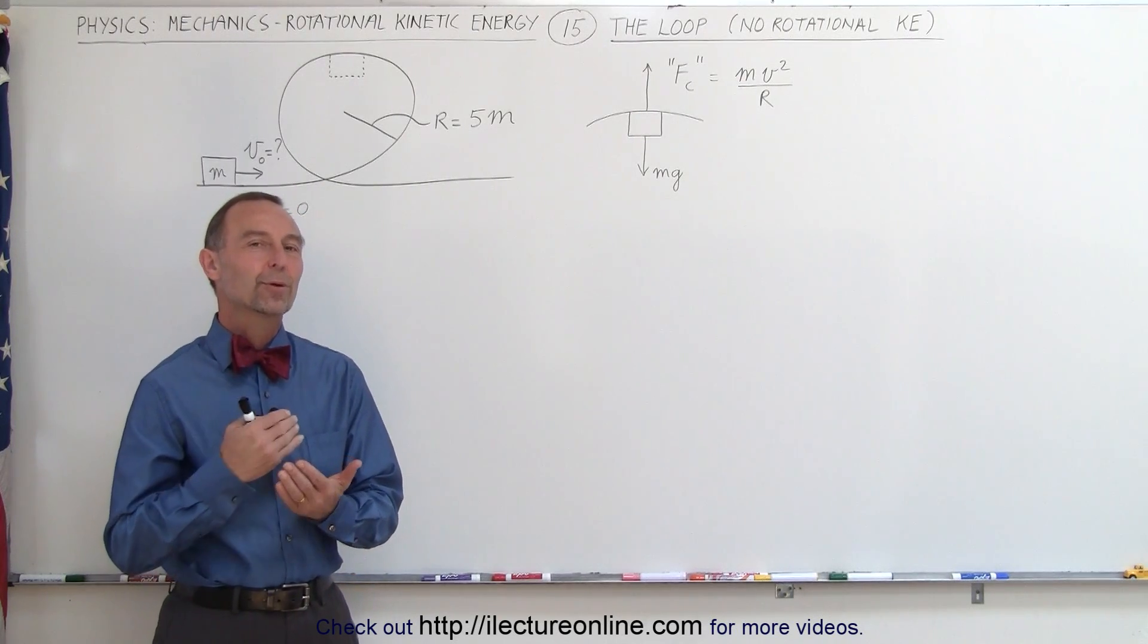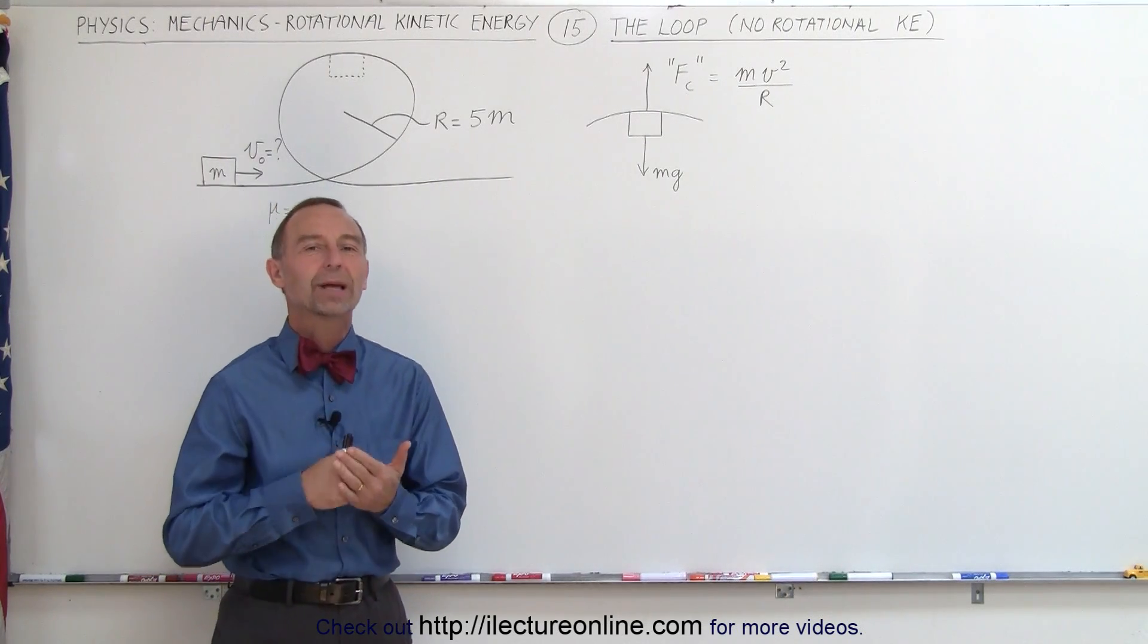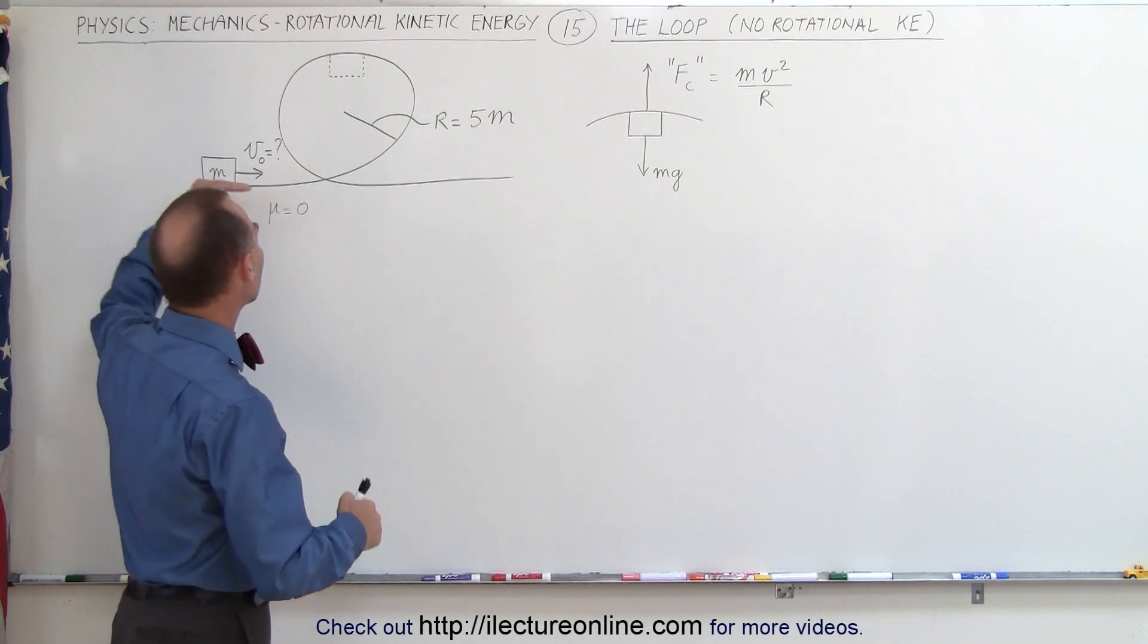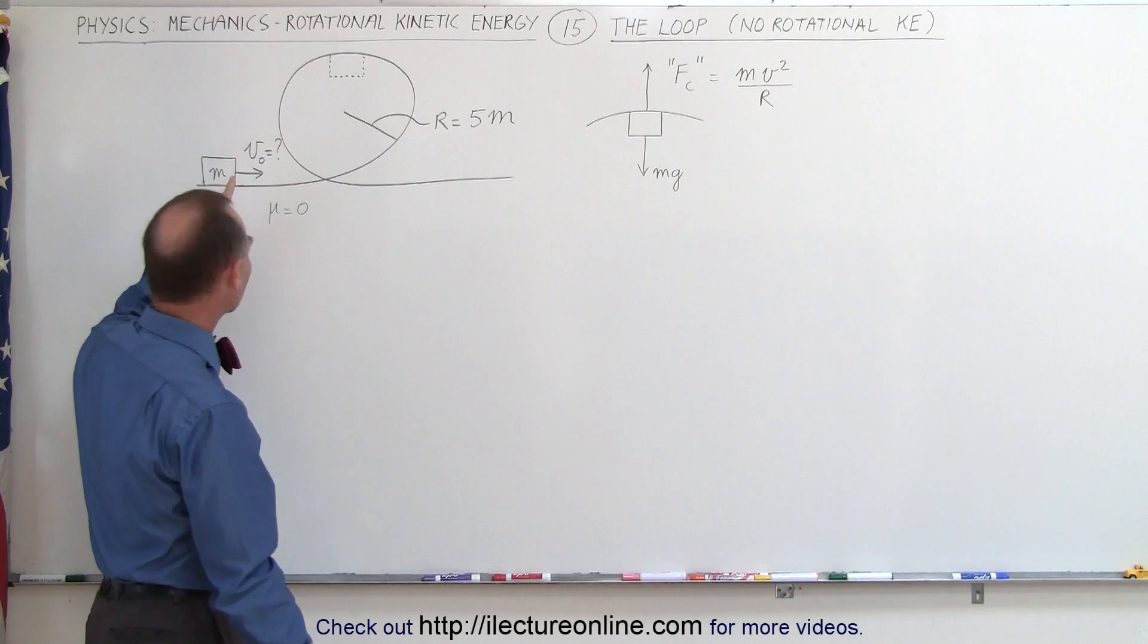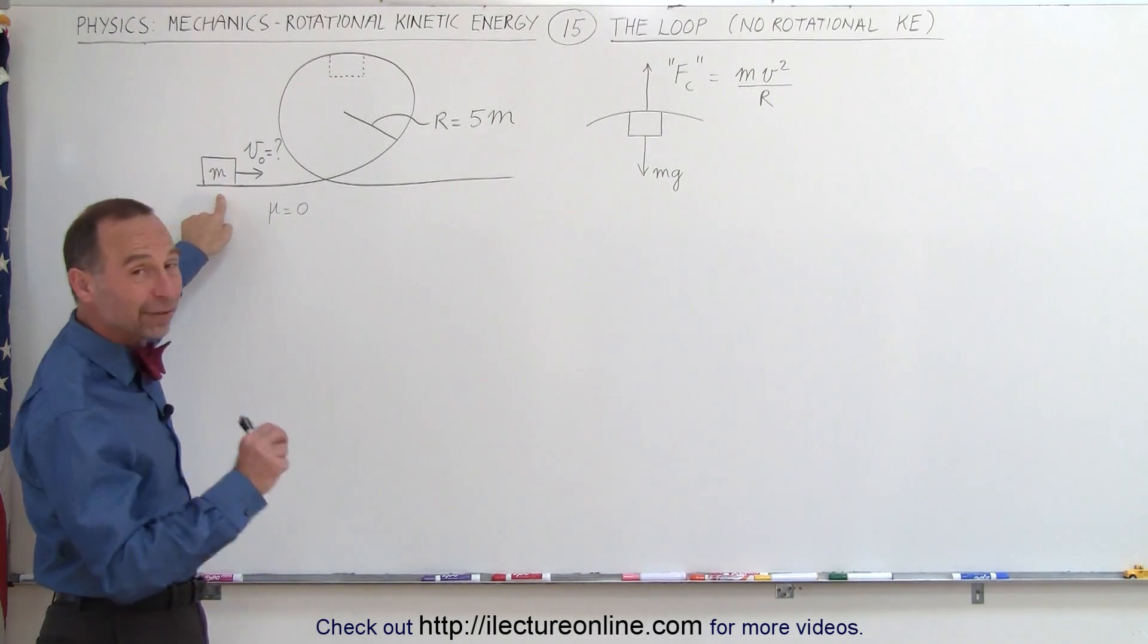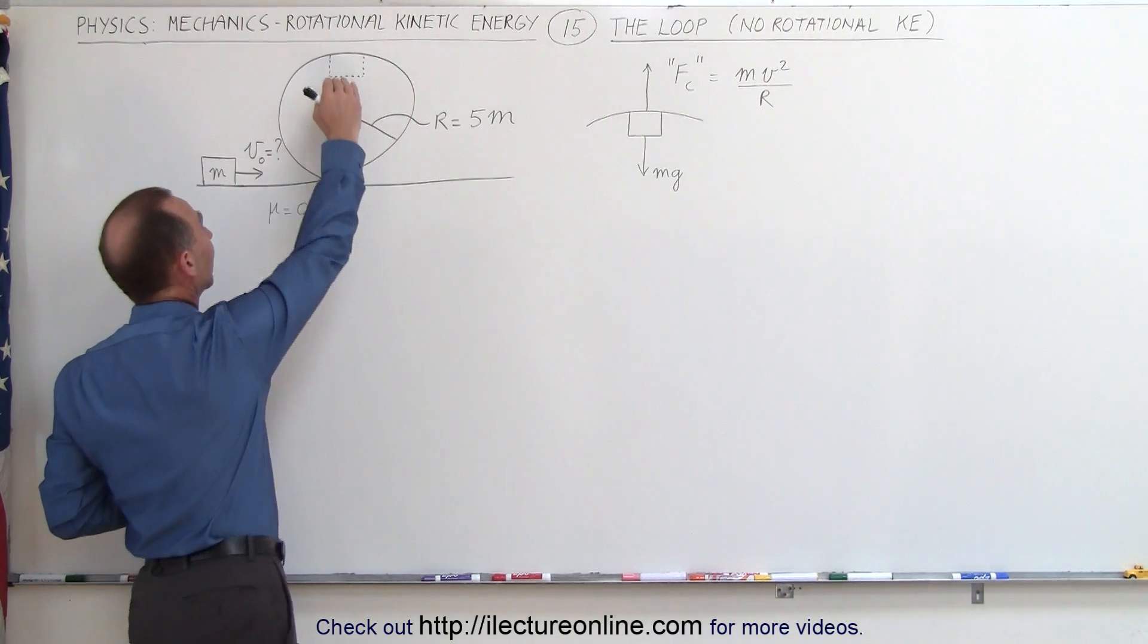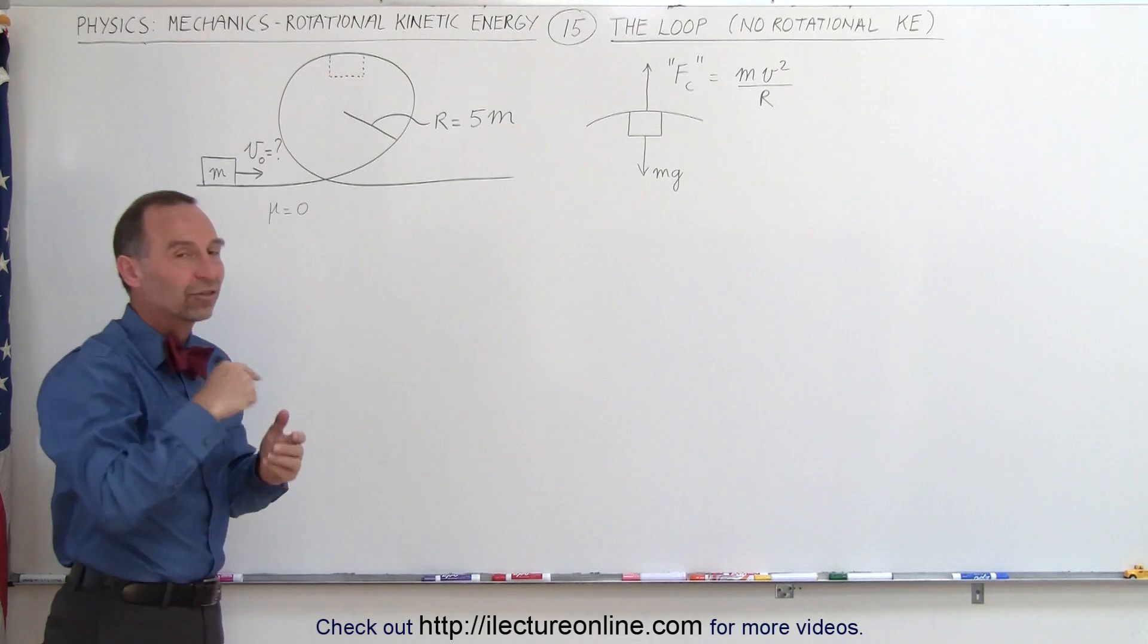Welcome to ElectronLine. Here we're going to do a loop-the-loop type of problem. What we mean with that is we're going to have an object that's going to slide through this loop here, and we want the object to have enough initial velocity so that it will not fall from the loop when it gets to the top.